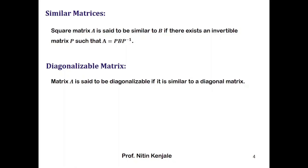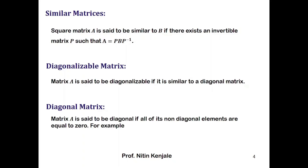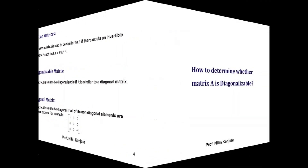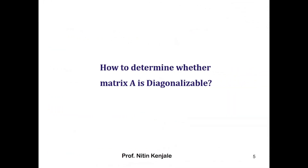Now let us see the definition of a diagonalizable matrix. We say that a matrix A is diagonalizable if it is similar to a diagonal matrix. If we take that matrix B is a diagonal matrix, then A is diagonalizable. A diagonal matrix is a matrix whose non-diagonal elements are all equal to zero.